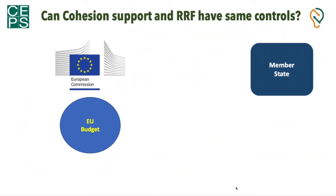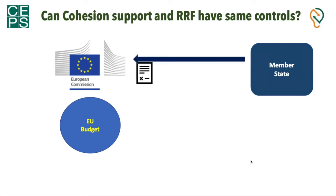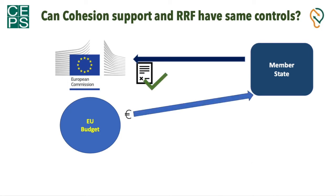It is fully understandable that an observer may consider that the cohesion policy and the recovery and resilience facility would have the same financial controls. After all, they seem to work very similarly. On the one side, the member state will send the program and once the program is approved, the funds are just sent to the country. But that's really where the similarities stop.